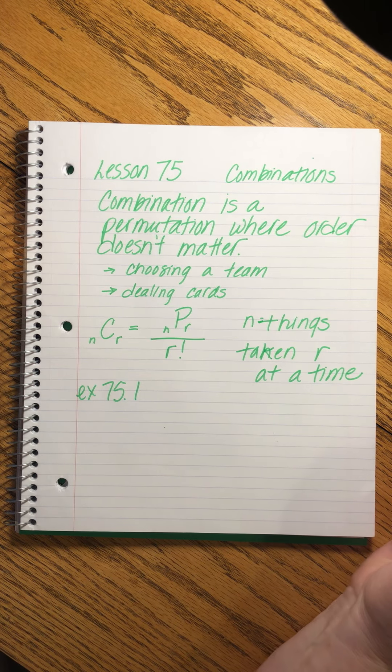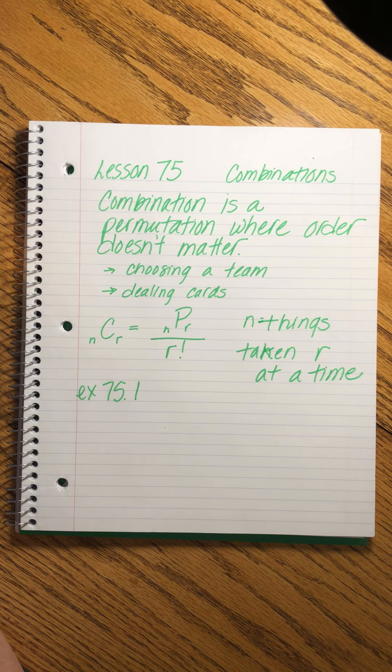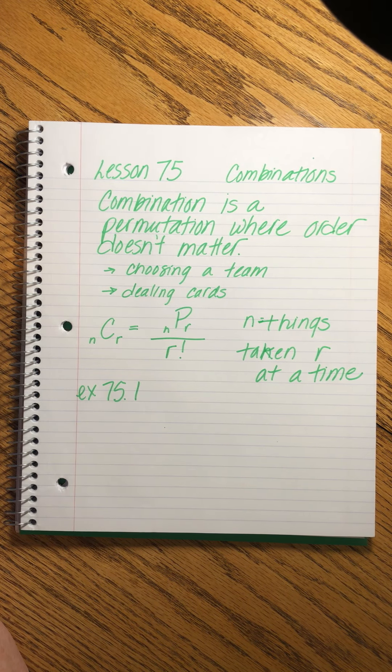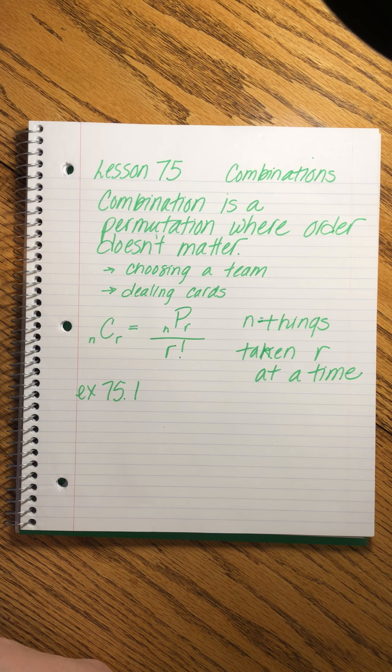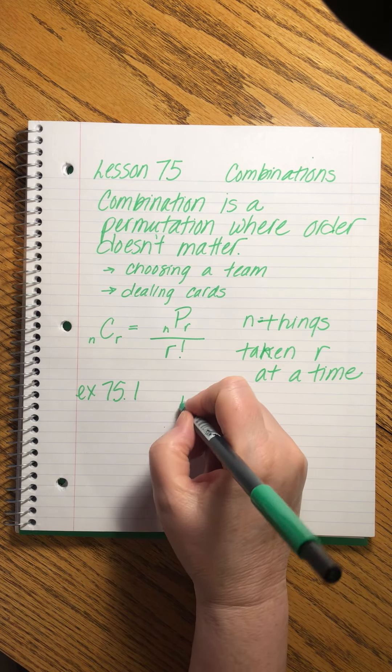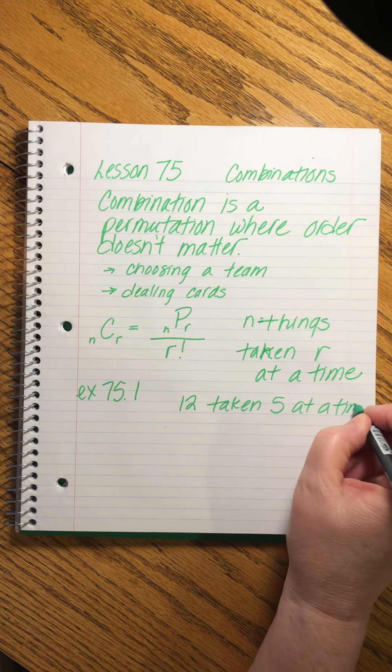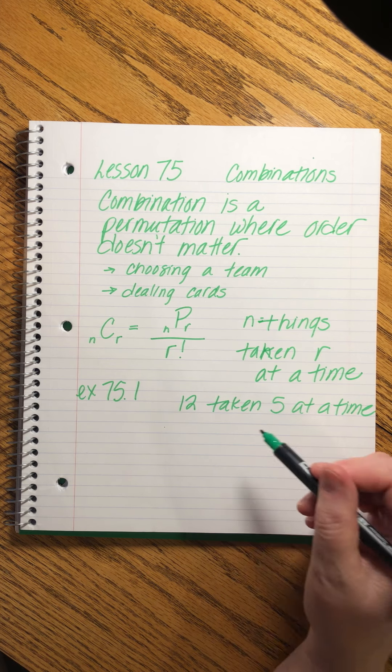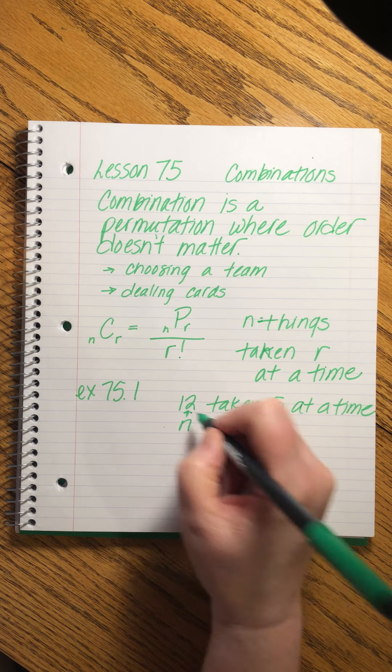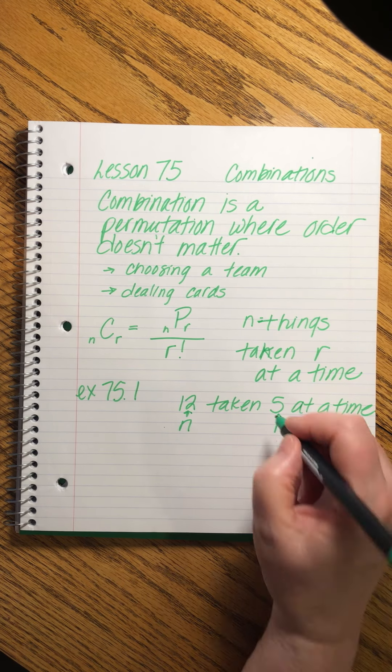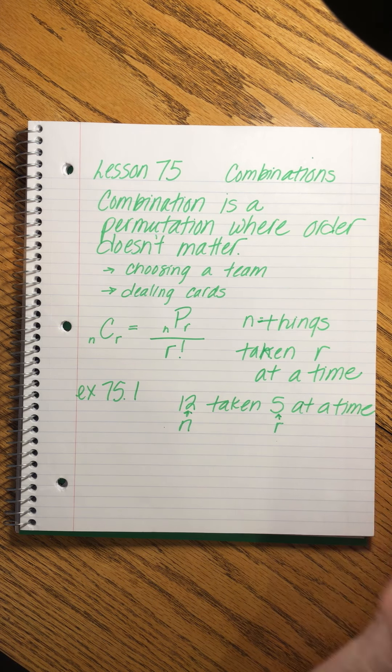Ready? You can see how many examples there are. There are three. My favorite kind of lesson. You need a story. Let me read it to you. In how many ways can a committee of five students be selected from a group of 12 students? So that's 12 students taken five at a time.